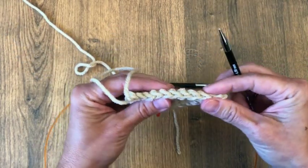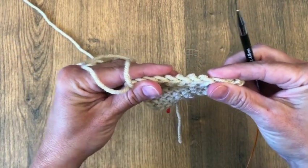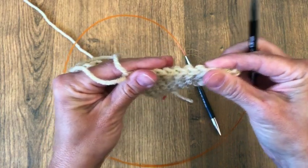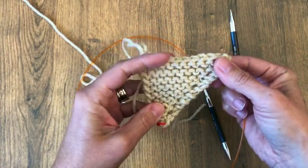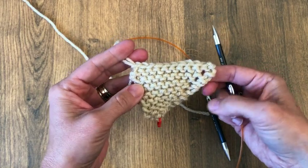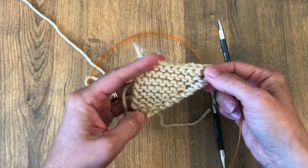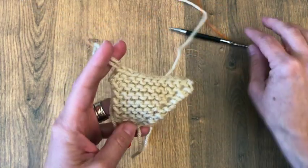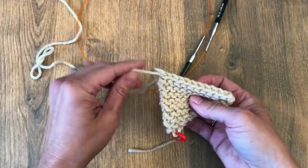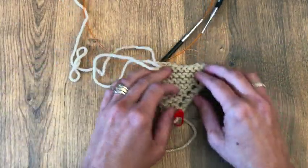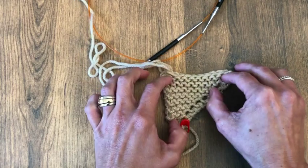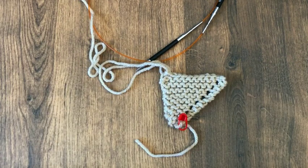Okay, so there we have our nice neat bind off edge. It's not terribly stretchy and it's not terribly tight, so it kept the same width there that we had. And that's it. You can cut your yarn and weave in your ends, and you're all set. Block your scarf and you're good to go.